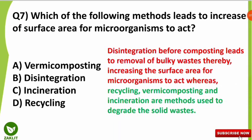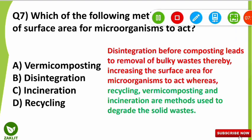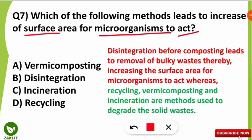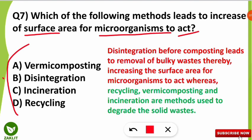The seventh question was: which of the following methods leads to an increase in surface area for microorganisms to act upon? The correct option is option B — the disintegration process. This disintegration process comes before composting, and it takes place to remove bulky waste.